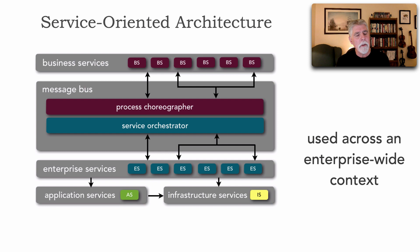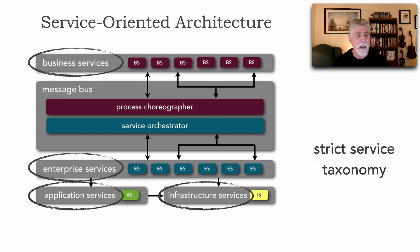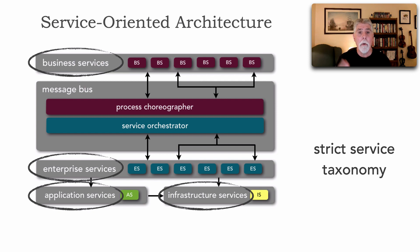The first difference between service-oriented and service-based is that service-oriented has an enterprise-wide context. We create services that different areas, domains, divisions, and departments will leverage. A good example is the enterprise service 'customer' in a large insurance company, which may be leveraged by personal insurance, home insurance, travel insurance, and business insurance — all different departments. SOA also contains a fairly strict service taxonomy defining business services, enterprise services, application services, and infrastructure services, though the taxonomy can stretch to ten different kinds of services.